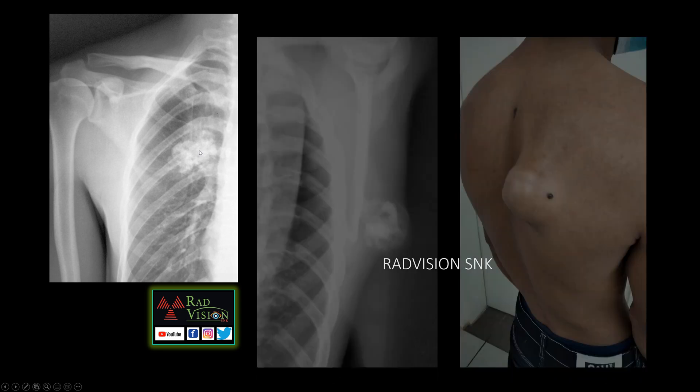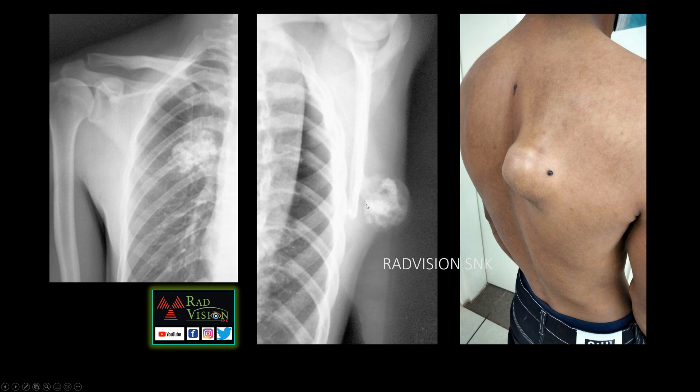Next case: a lobulated calcified mass projected over the right upper zone. On the frontal radiograph it is unclear whether this mass arises from the rib, scapula, lung, or soft tissues. Taking a lateral or lateral oblique view clearly shows a pedunculated bony mass with a thick cartilaginous cap arising from the scapula.